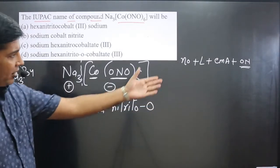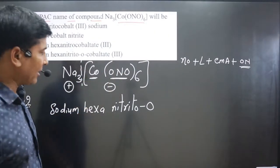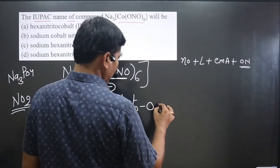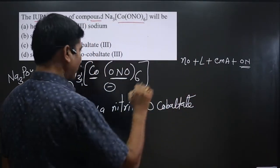Then we have the central metal atom. The central metal atom is present in the anionic part, so we say it is cobaltate.